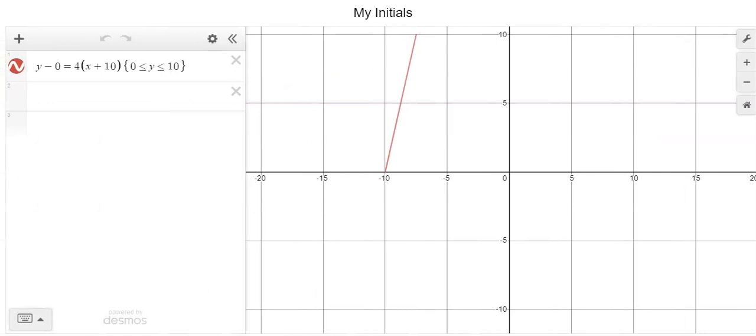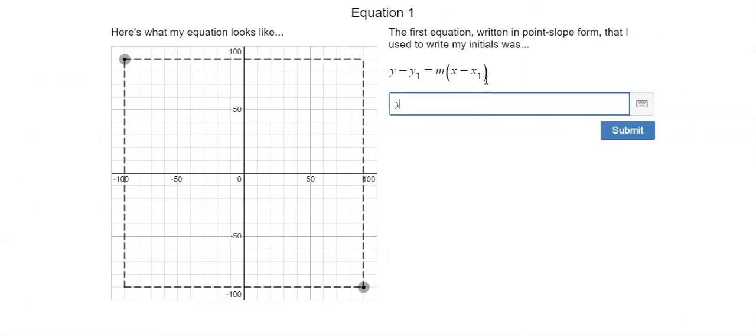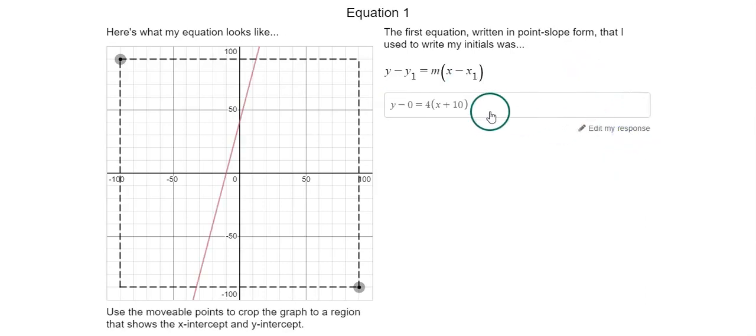So now I'm going to take this equation and I'm going to write it on the next screen because now I need to fill out all of the attributes about my equation. My first equation is Y minus zero equals four times X plus 10. So I'm going to type that in here. When I press submit, it will graph the line back for me on the screen.